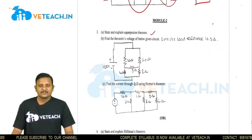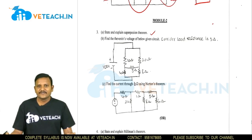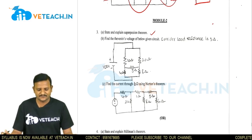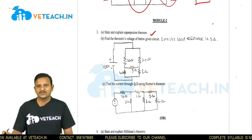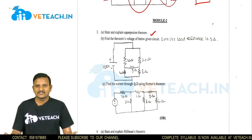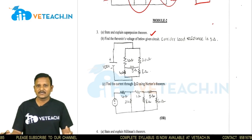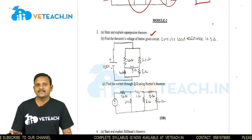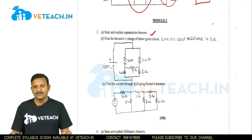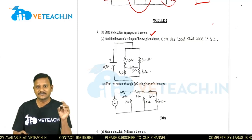In module 2, we have network theorems, which are very important. There are different types: superposition theorem, reciprocity theorem, Thevenin's theorem, Norton's theorem, maximum power transfer theorem, and Milliman's theorem. The first question is: state and explain the superposition theorem. The superposition theorem states that in any linear bilateral network having multiple sources, the response in any element equals the algebraic sum of the responses caused by each individual source acting alone.